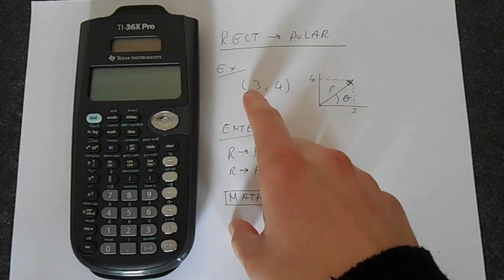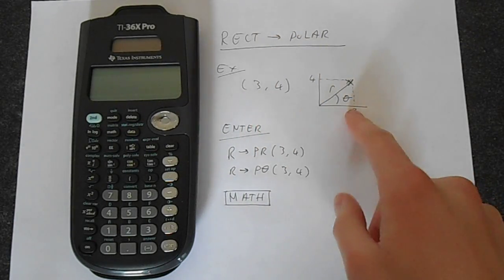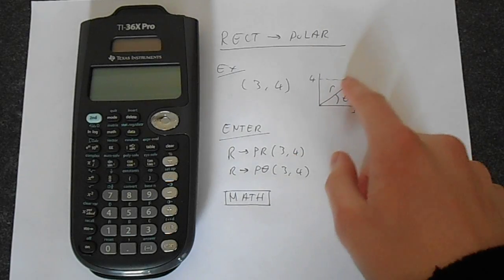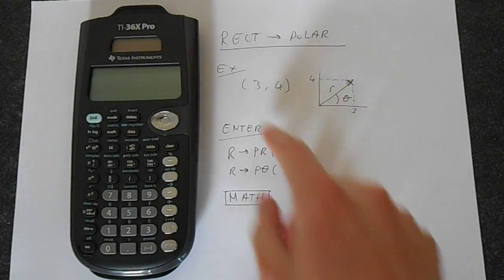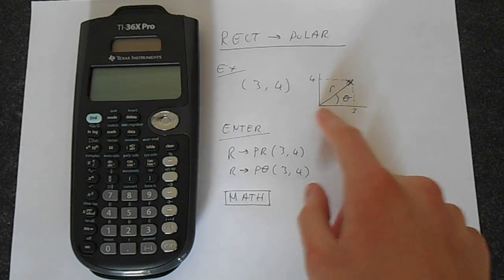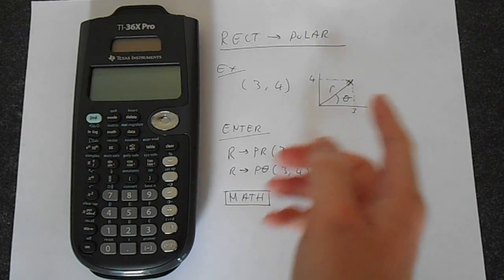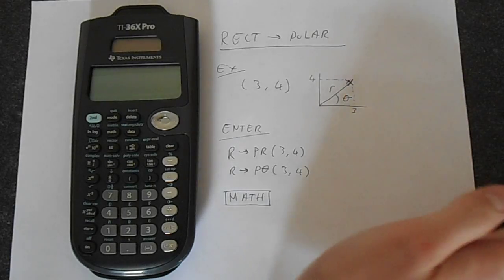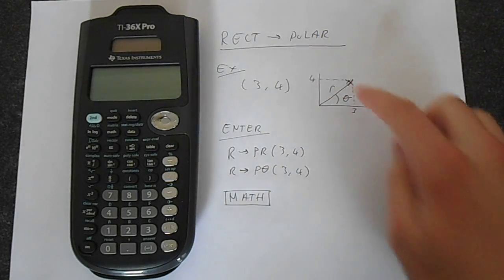We're going to convert (3, 4), so 3 along that way and 4 up that way defining a point, into polar form. So we're going to define this point instead of by looking at x and y, you have some distance r rotated through theta, and that defines the point.